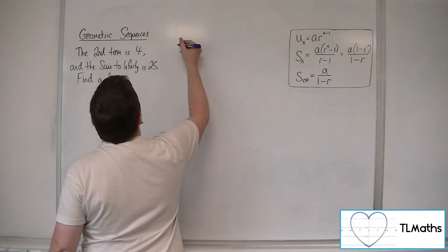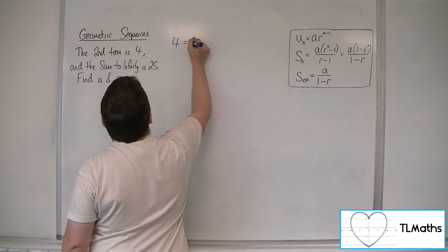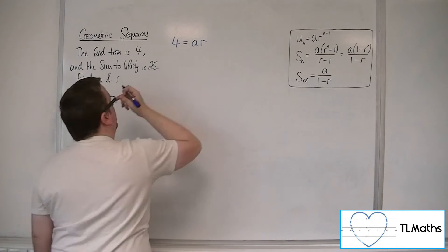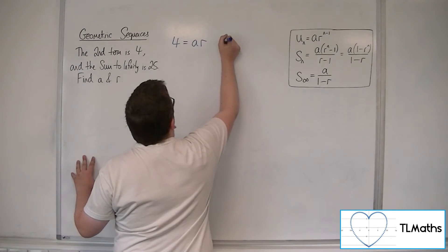So if the second term is 4, then 4 is equal to ar to the 2 minus 1, which is 1. So 4 equals ar. That can be my first equation.